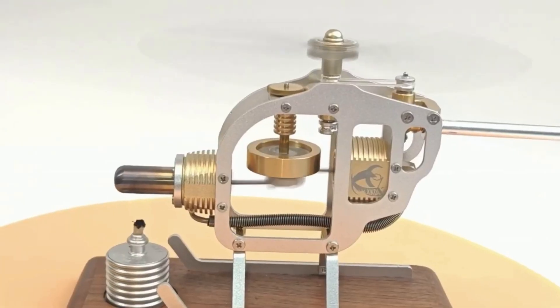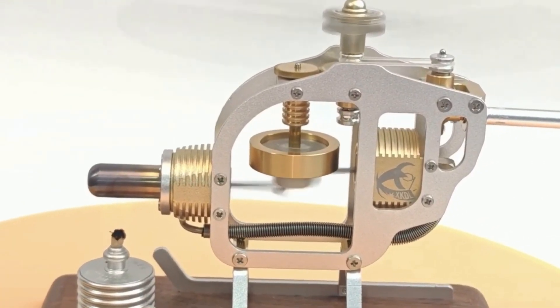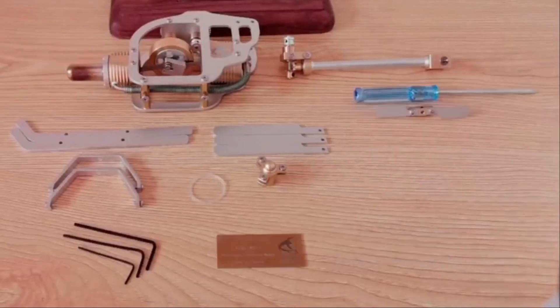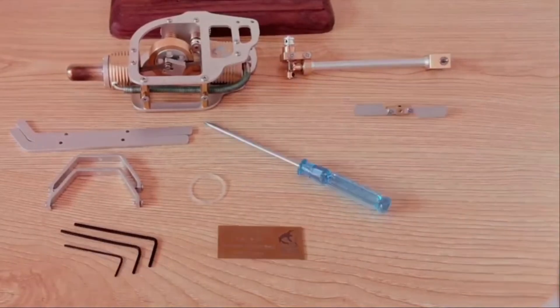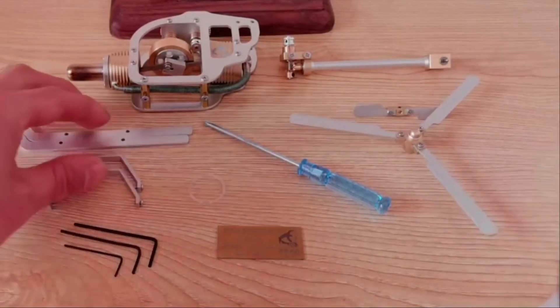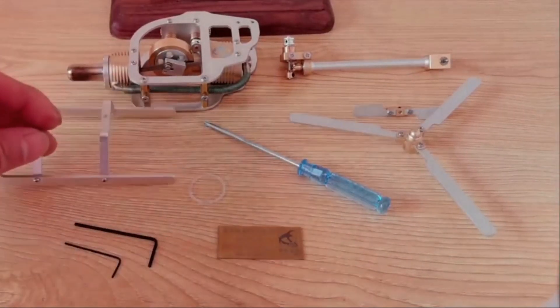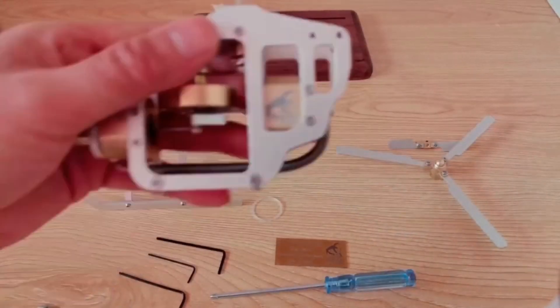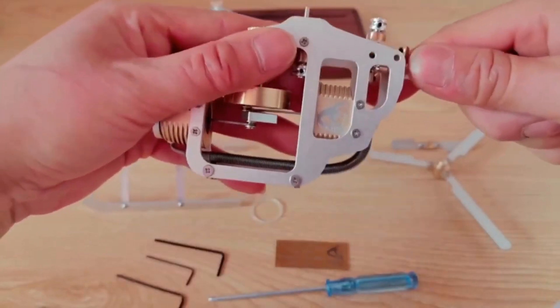If you've ever wondered how engines can work without electricity, the Sterling engine helicopter is for you. This is a fantastic kit that teaches you the principles of thermodynamics and mechanical engineering in a way that's engaging and educational. Made from high quality materials like aluminum alloy, stainless steel, and bamboo, this model is sturdy and eco-friendly.